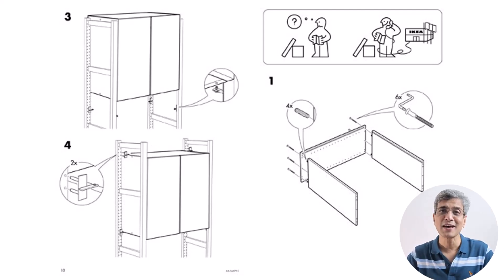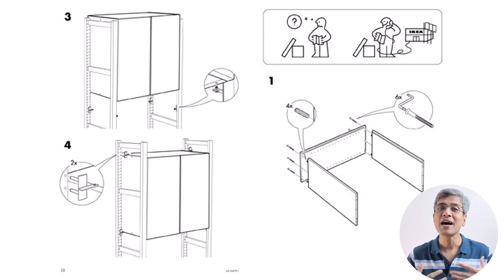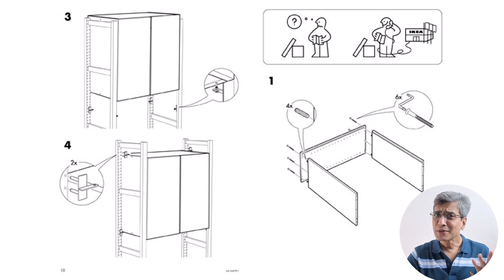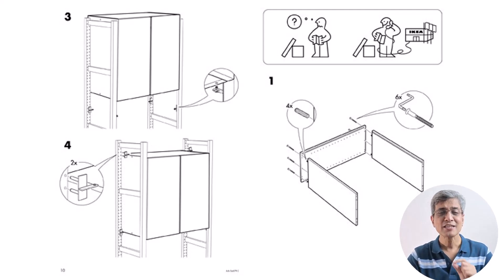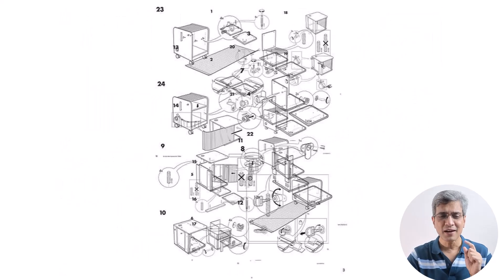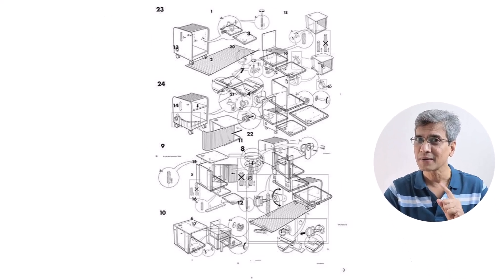Now what if you had an instructional sheet that looked like this? Pretty easy on the eye — you almost want to start the assembly immediately, isn't it? Now why do you think that this instruction is far simpler compared to this? Think about it.